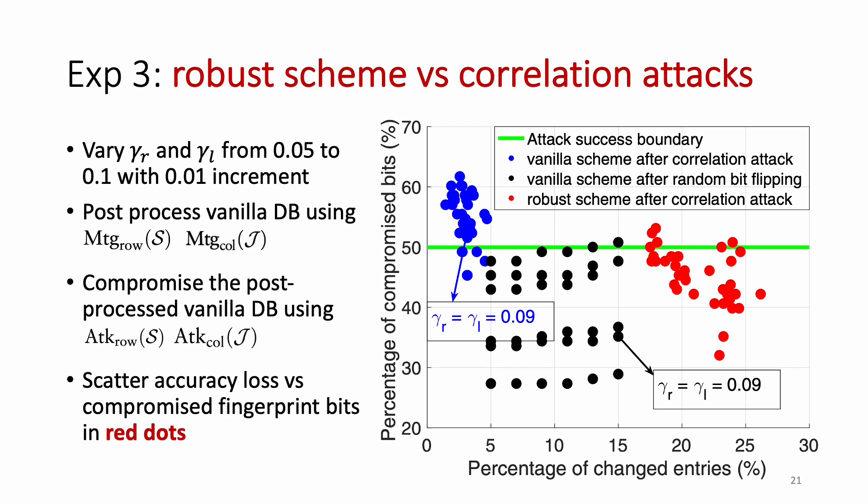In the third experiment, we show that we can effectively mitigate the correlation attack using our proposed mitigation technique. Similarly, we vary gamma-R and gamma-L from 5% to 10%. But after inserting the vanilla fingerprint, we also post-process the database using our proposed row-wise and column-wise mitigation technique. We scatter the accuracy loss versus the compromised fingerprint bits in red dots in the figure on the right. Clearly, for most cases, we can successfully defend against the correlation attack, even though the attacker modifies significantly more entries in the fingerprinted dataset.